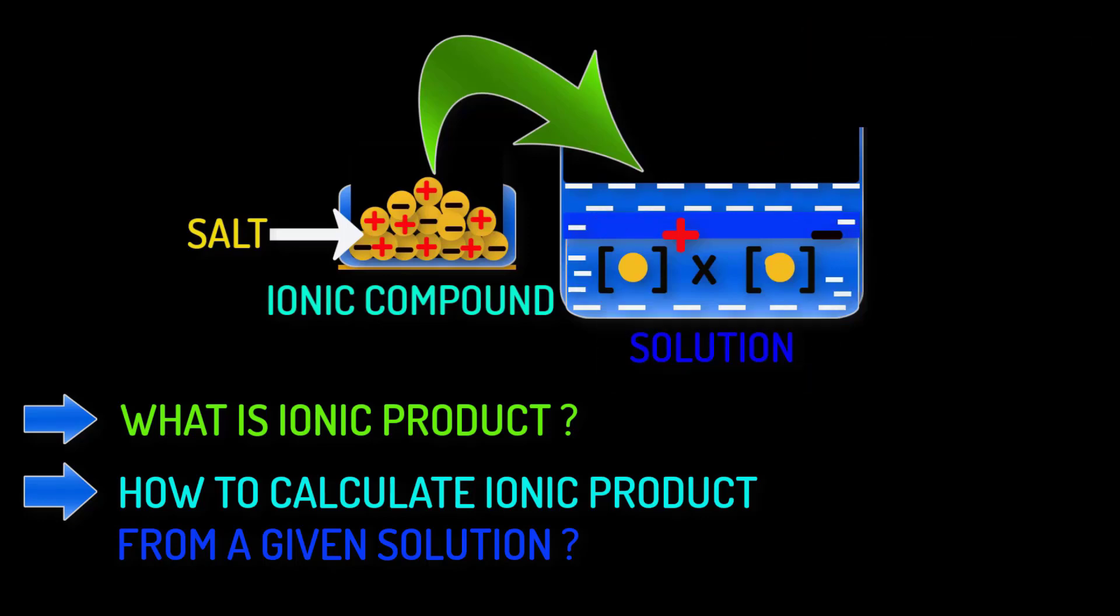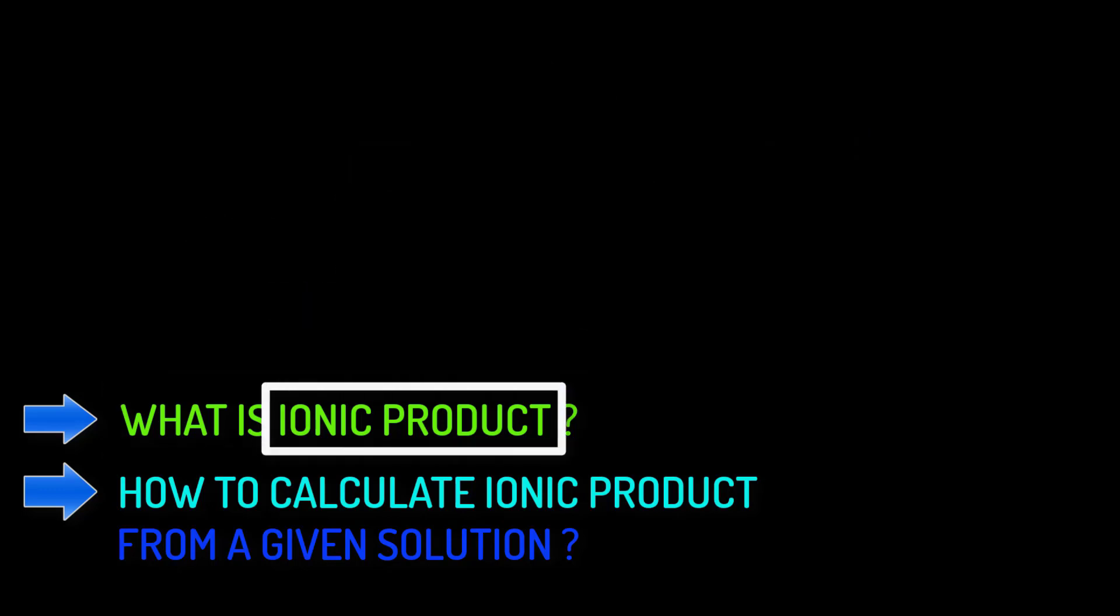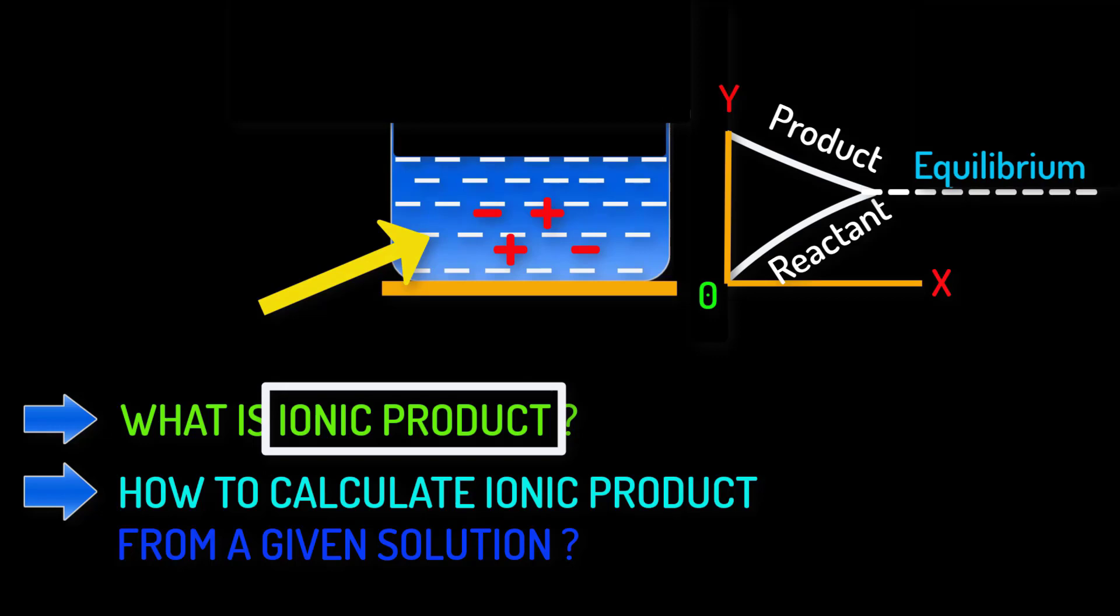Let's start with this topic first. What is ionic product? Actually ionic product is nothing but the measure of the ions in a saturated or unsaturated solution. We use ionic product to determine whether a solution is at equilibrium state or not.